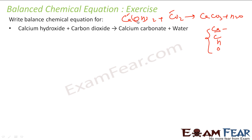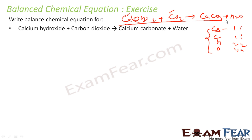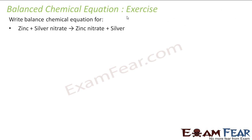We will check the calcium part: 1 here and 1 here — balanced. Carbon part: 1 here and 1 here — balanced. Hydrogen part: 2 here and 2 here — balanced. Oxygen part: 2 plus 2 equals 4 here, and 3 plus 1 equals 4 here — balanced. So this is already a balanced equation. You do not need to balance it further.